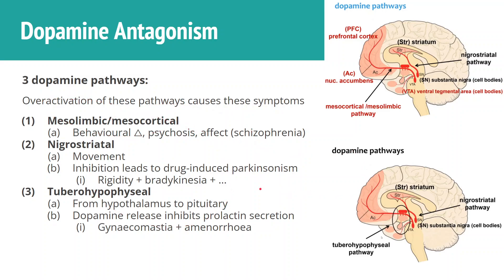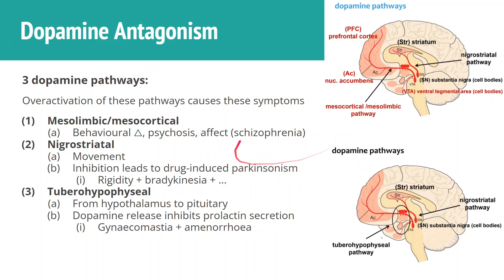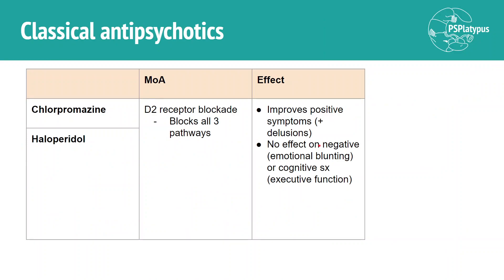Broadly, there are three pathways we can affect with dopamine antagonists. For antipsychotics, we want to use this to have an effect on symptoms. We categorize antipsychotics into classical and atypical antipsychotics — classical is like the first generation, atypical is like the second generation.